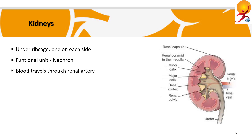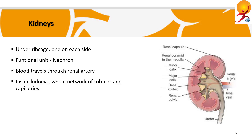Blood travels to each kidney through the renal artery. Once in the nephrons, it is filtered by the glomerulus, then travels down a tiny tube-like structure called the tubule, which adjusts the level of salts, water and waste that are excreted in the urine.